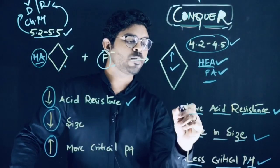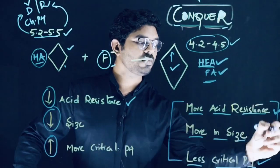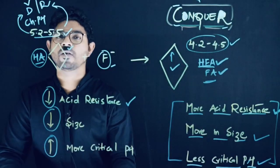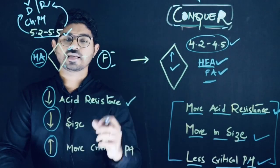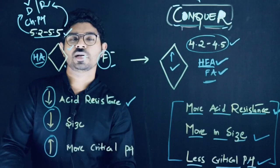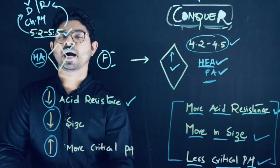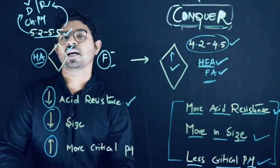Taking these advantages into consideration—fluorohydroxyapatite or fluorapatite requires more acid for dissolution, increasing in size—all these are advantages which make it tough for bacteria to dissolve or tough for acid to dissolve.